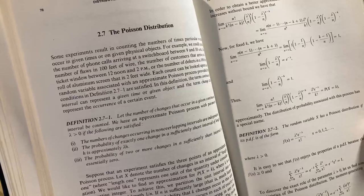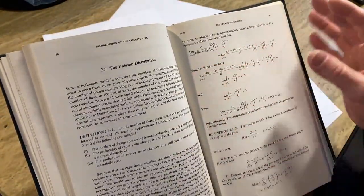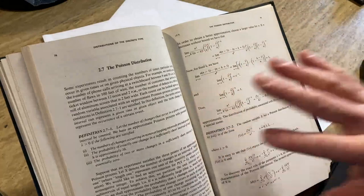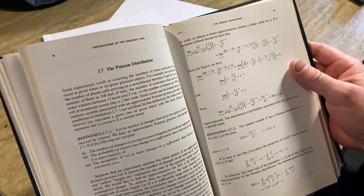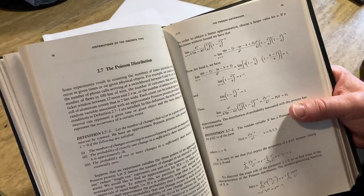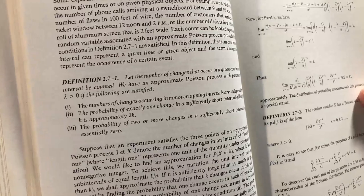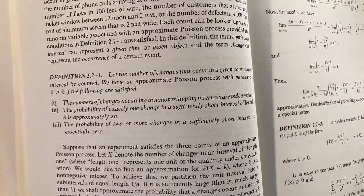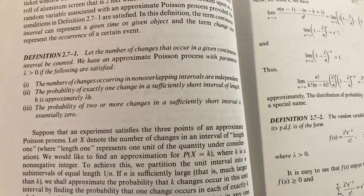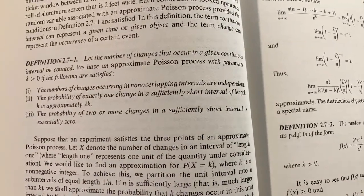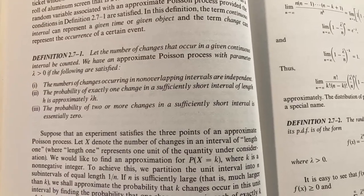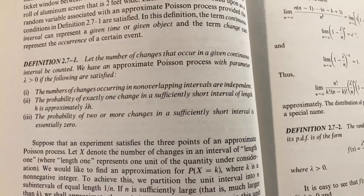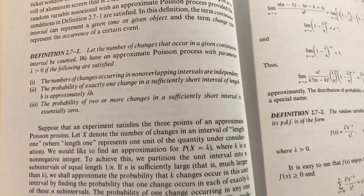The Poisson distribution. I spent a lot of time working with this. I took a course in grad school called Stochastic Processes. It's like a very high-level course, like 7,000-level or something ridiculous. And most of our homework problems involve the Poisson distribution. We use the book by Ross, which is Stochastic Processes. Let the number of changes that occur in a given continuous interval be counted. We have an approximate Poisson process with parameter lambda greater than 0. If the following are satisfied, the numbers of changes occurring in non-overlapping intervals are independent. The probability of exactly one change in a sufficiently short interval of length h is approximately lambda h. The probability of two or more changes in a sufficiently short interval is essentially zero. Very well done.